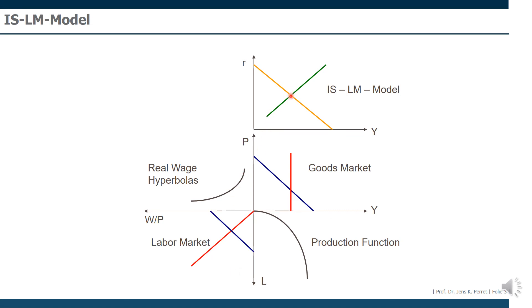So here we directly see how the labor market is linked to the IS-LM model. And we can also use this model here to discuss what happens if for some reason, we do not have any equilibrium, any domestic equilibrium, in the context of the IS-LM model anymore. What then happens with the labor market?